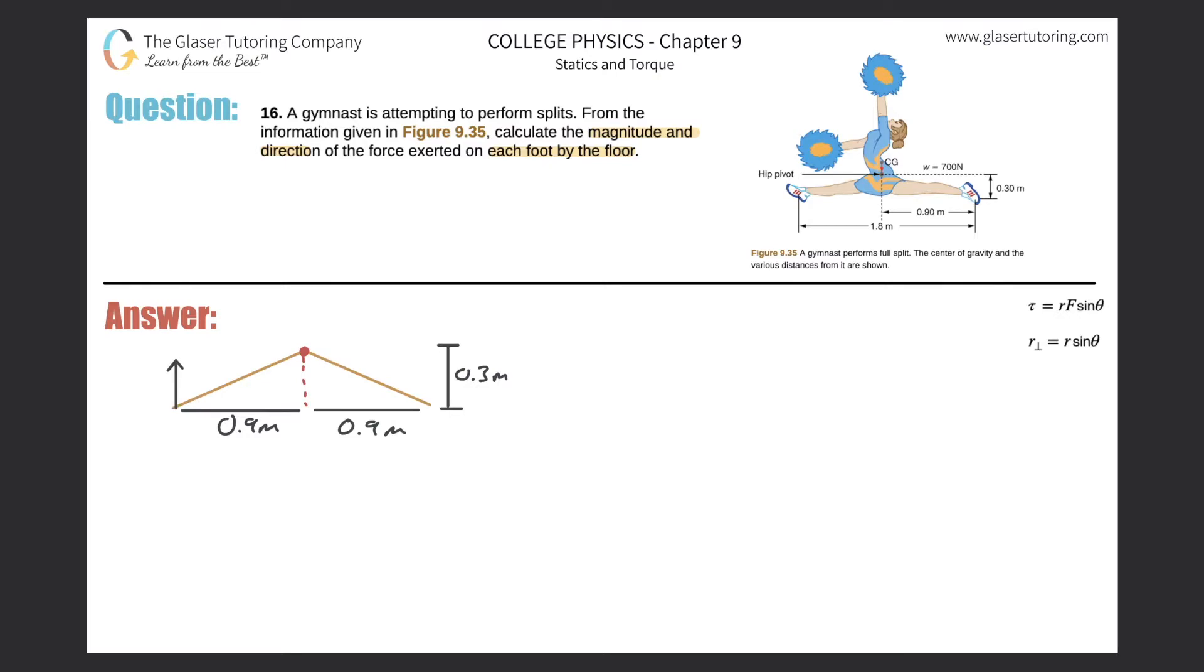Let's call this the normal force of that particular location. And then this would be for the left foot, and this would be the normal force produced for the right foot. And then we also know that the gymnast has a certain weight. The weight, it told us, was 700 newtons. So if that's the case, then this weight is going to be 700 newtons, and it's pointing directly down.